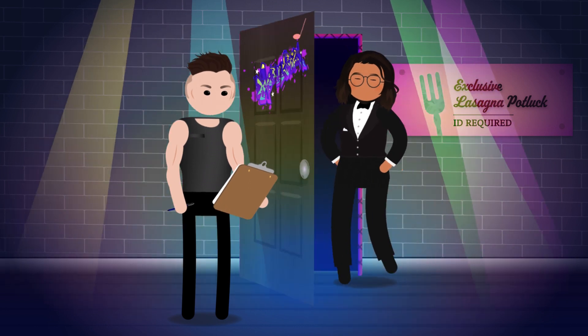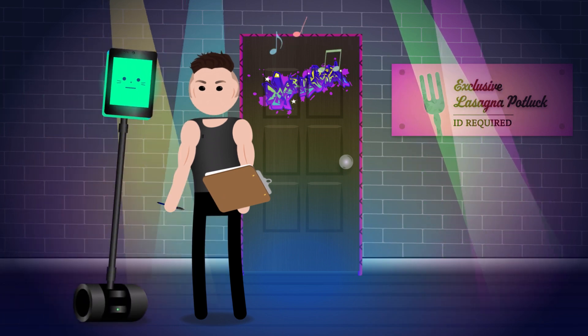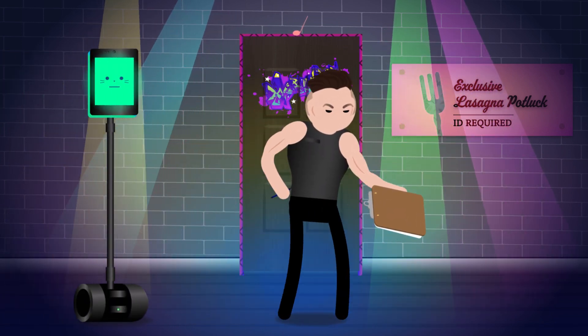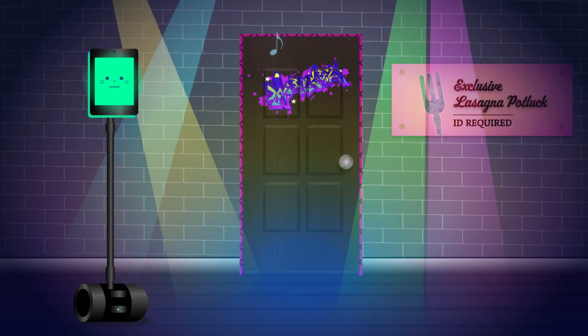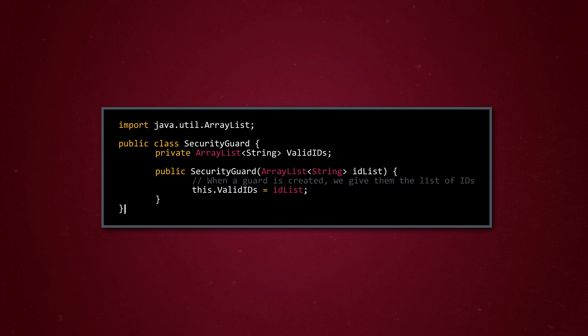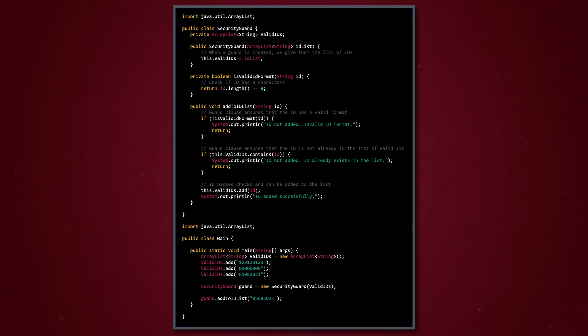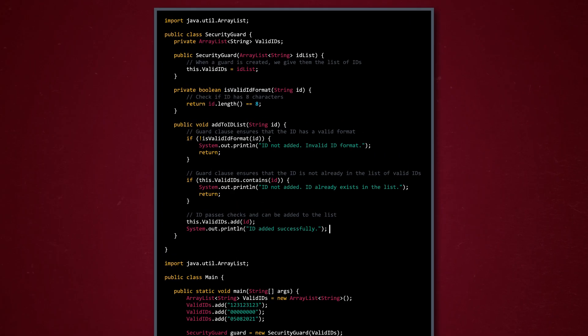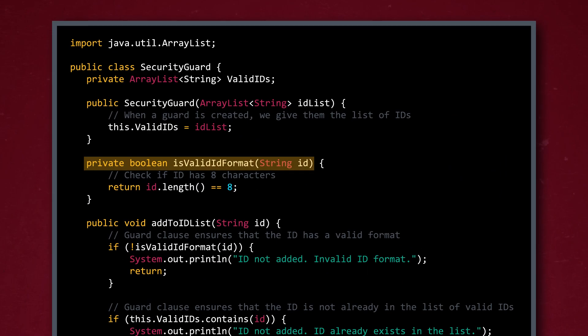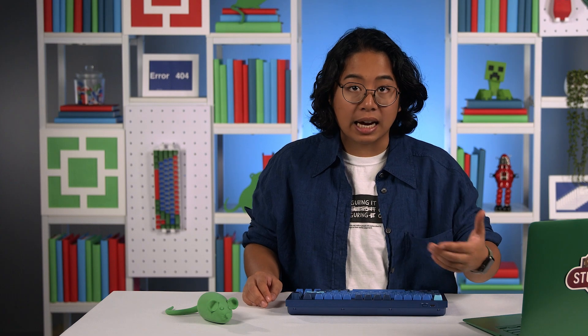If a new ID passes their specific series of checks, they add it to the list for next time. Now, let's say that this potluck decides to replace their human security guard with a computer program to do the exact same thing. To define the security guard class, we'll first add the ID list as a required attribute, since every security guard object will need one. Here's where the Defensive Programming comes in — the code that checks the format for every new ID. Let's assume that every potluck guest ID needs to be exactly 8 characters long. The straightforward way would be to add an ID to the ID list as long as it has 8 characters and the isValidIDFormat method returns true — but that's not actually the ideal solution. We should try to add a check before executing a code block so we don't run a potentially unnecessary process, especially when there's a lot of code below the check.